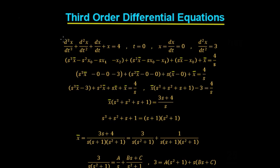We Laplace transform this to give us: the first term will be s³x̄ − s²x₀ − sx₁ − x₂. The second term will be s²x̄ − sx₀ − x₁, and the third term will be sx̄ − x₀. The final term gives us x̄, and the 4 becomes 4/s. We've just added in an extra term here for d³x/dt³.